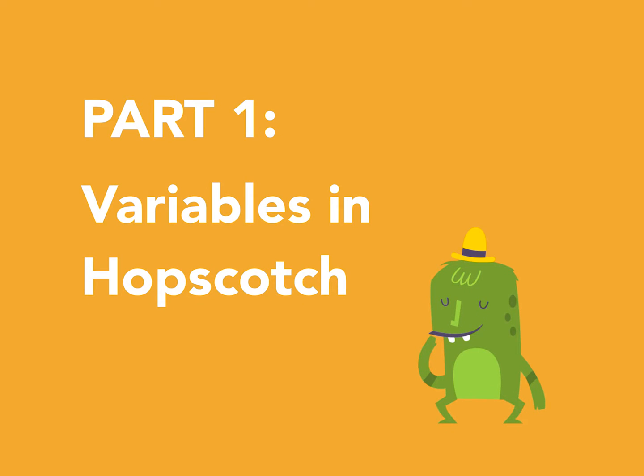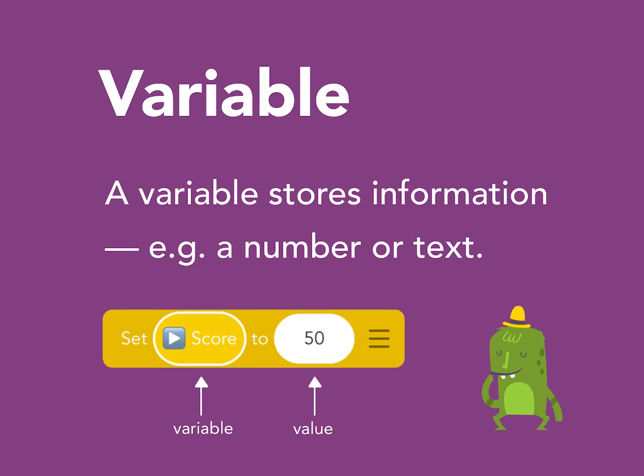Part 1: Variables in Hopscotch. A variable stores information. This can be a number or some text information, for example. This information is known as the value of the variable. Keeping this information in a variable lets objects perform calculations and share information with each other.